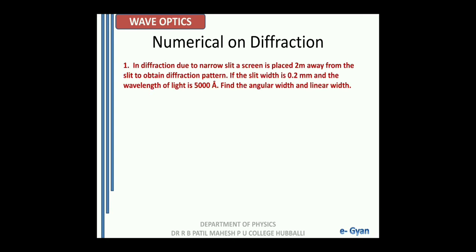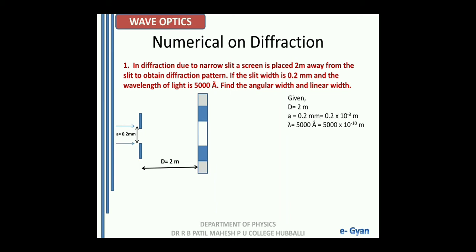Now let us move to the numerical on diffraction. In diffraction due to a narrow slit, a screen is placed 2 meters away from the slit. The slit width is 0.2 mm and the wavelength of light is 5000 angstrom, which equals 5000 × 10⁻¹⁰ meters. Find the angular width and the linear width of the central maxima.